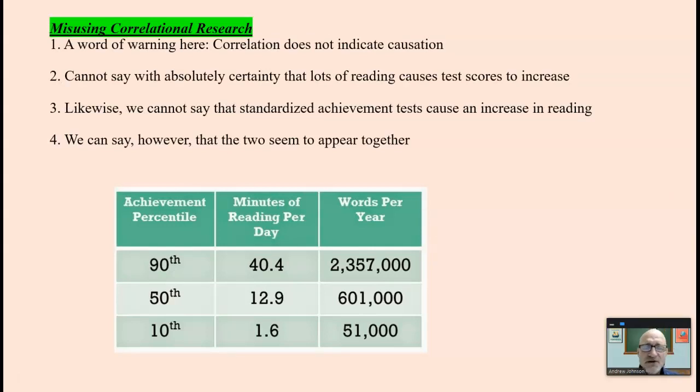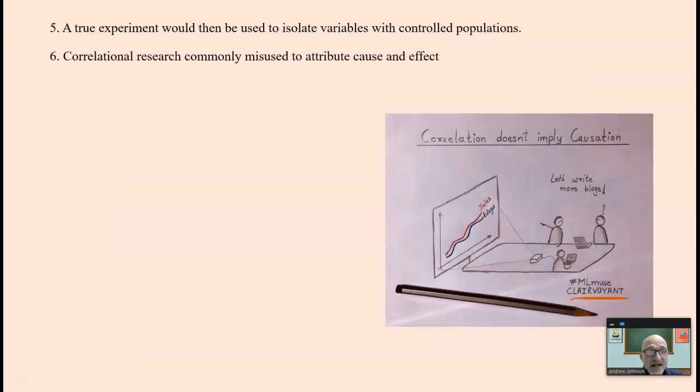A misuse. And you've heard the phrase, and I'll say it again: correlation does not indicate or confer causation. Just because two variables are related, we cannot say that one causes the other. In the example above, we cannot say with absolute certainty that lots of reading causes test scores to increase, although we may suspect as much. And likewise, we cannot say that standardized achievement tests cause reading to increase, but we can say the two seem to appear together.